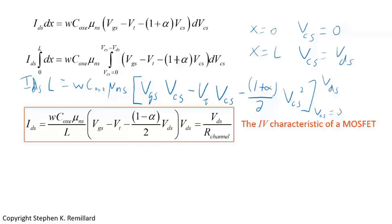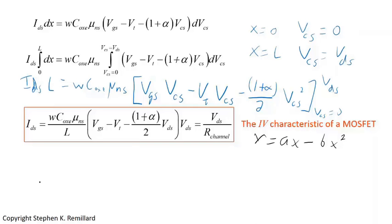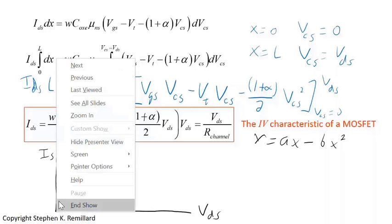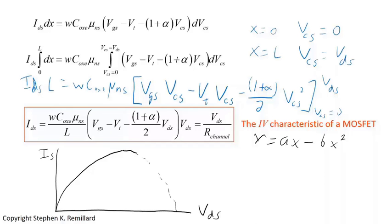That's our IV model for the MOSFET, including the body effect through alpha. By Ohm's law, I = V/R, so everything multiplying V_DS is 1 over the channel resistance. Plotting I_DS versus V_DS, when V_DS = 0 there is no current; the curve is a concave-down parabola of the form y = Ax minus Bx squared. The slope goes to zero at a peak — that's saturation.